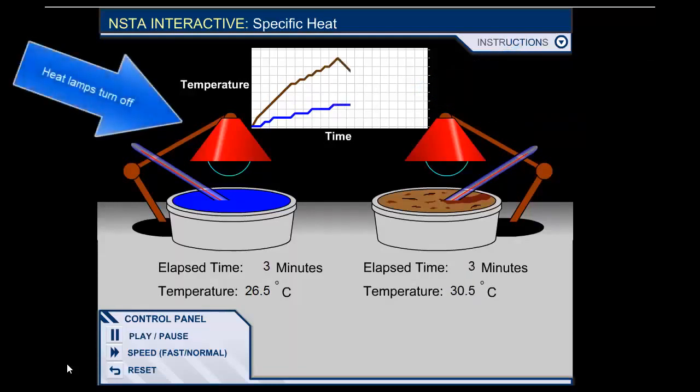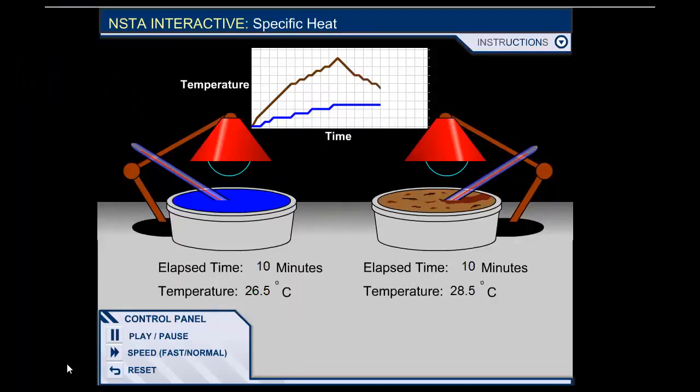Note too it's the same for cooling. When the lamps turn off, both samples begin to lose heat to the surroundings. The earth with a low heat capacity drops its temperature much faster because a small loss of energy makes a big difference to it.